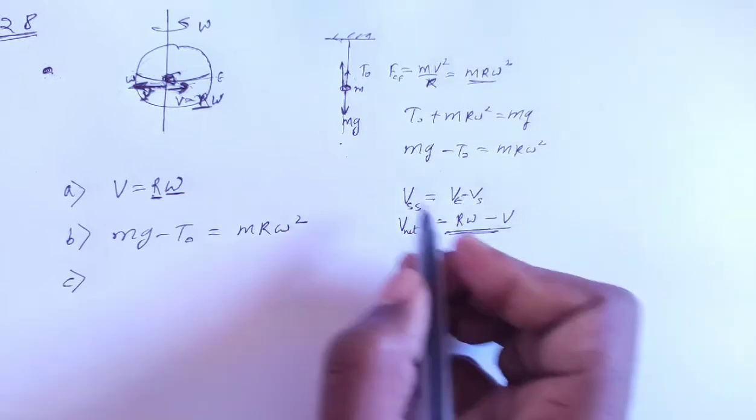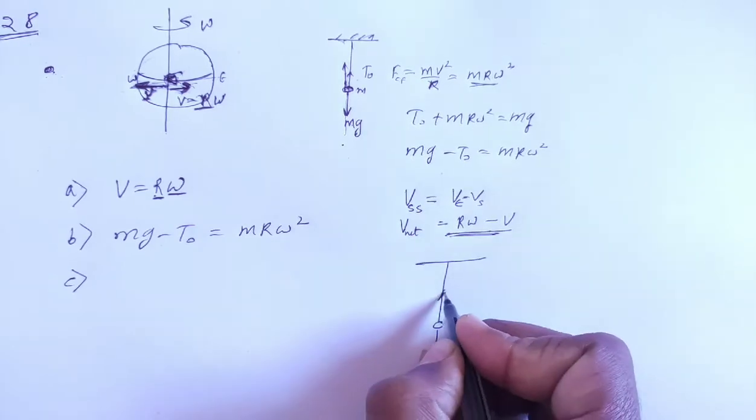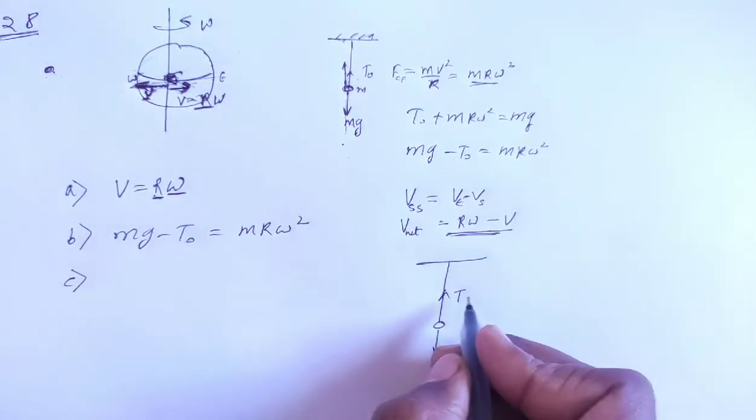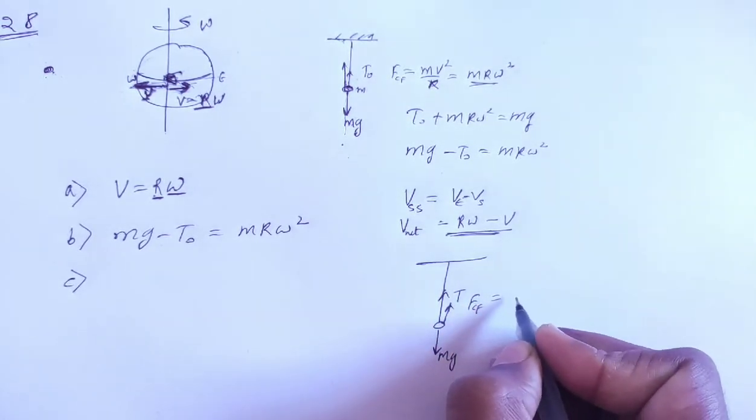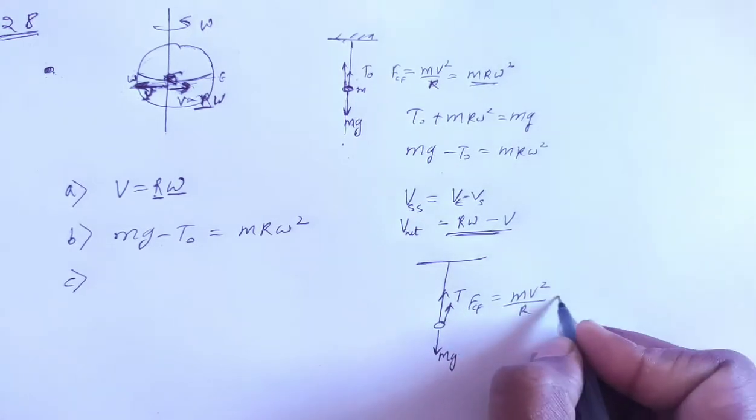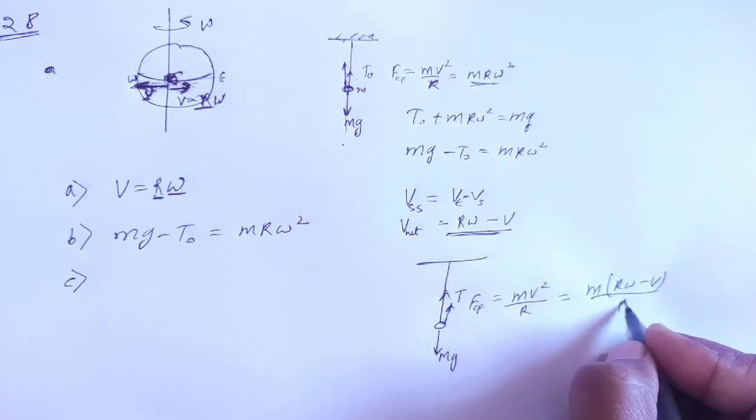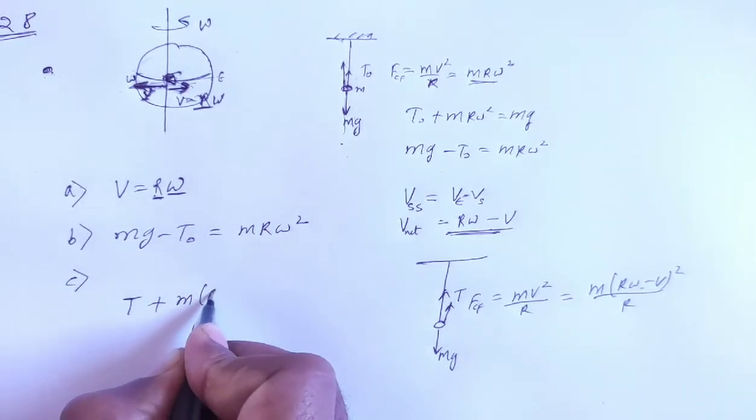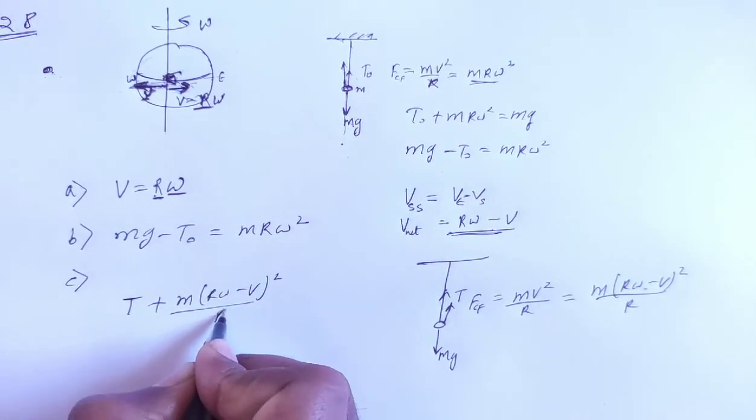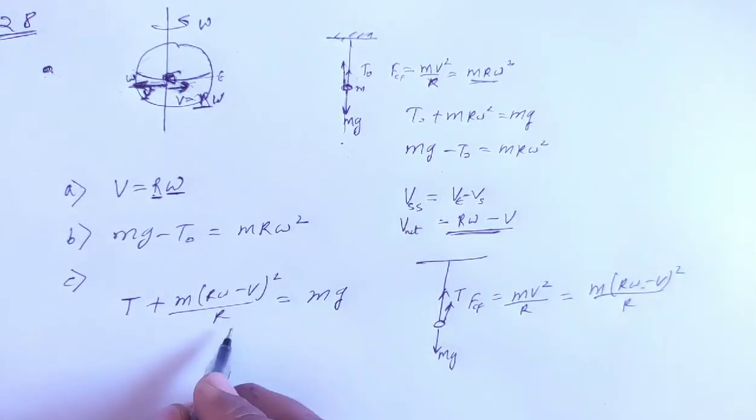Let me draw the FBD again. This is your bob with downward force mg, upward tension T, and upward centrifugal force m v² / r, where v is R omega minus v. So centrifugal force is m (R omega minus v)² / r. Therefore T plus m (R omega minus v)² / r equals mg.